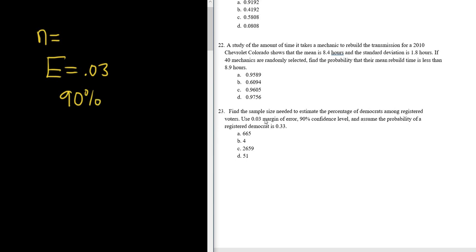And assume the probability of a registered Democrat is 0.33. So this is called the target proportion. This is what we know. So target proportion is equal to 0.33.